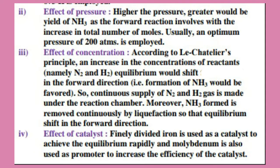The last effect is the effect of catalyst. We had already discussed that a catalyst does not shift the equilibrium state — it only helps to reach the equilibrium state in a shorter time. So, finely divided iron is used as a catalyst to achieve the equilibrium state rapidly. Molybdenum is also used as a promoter to increase the efficiency of the catalyst.